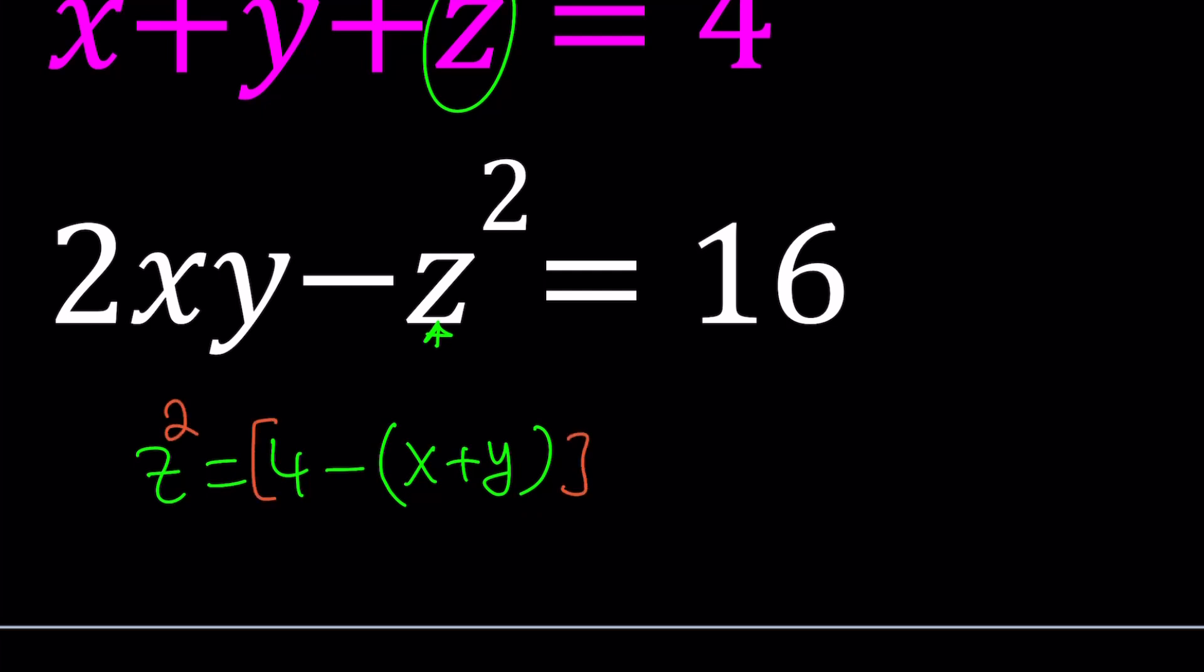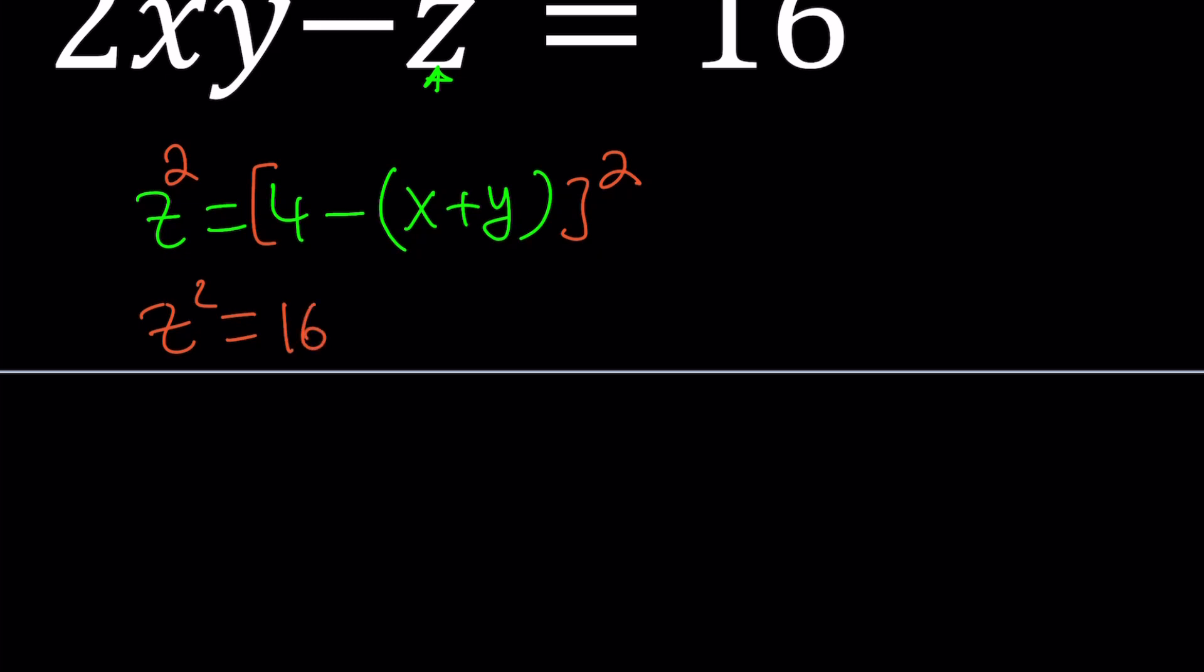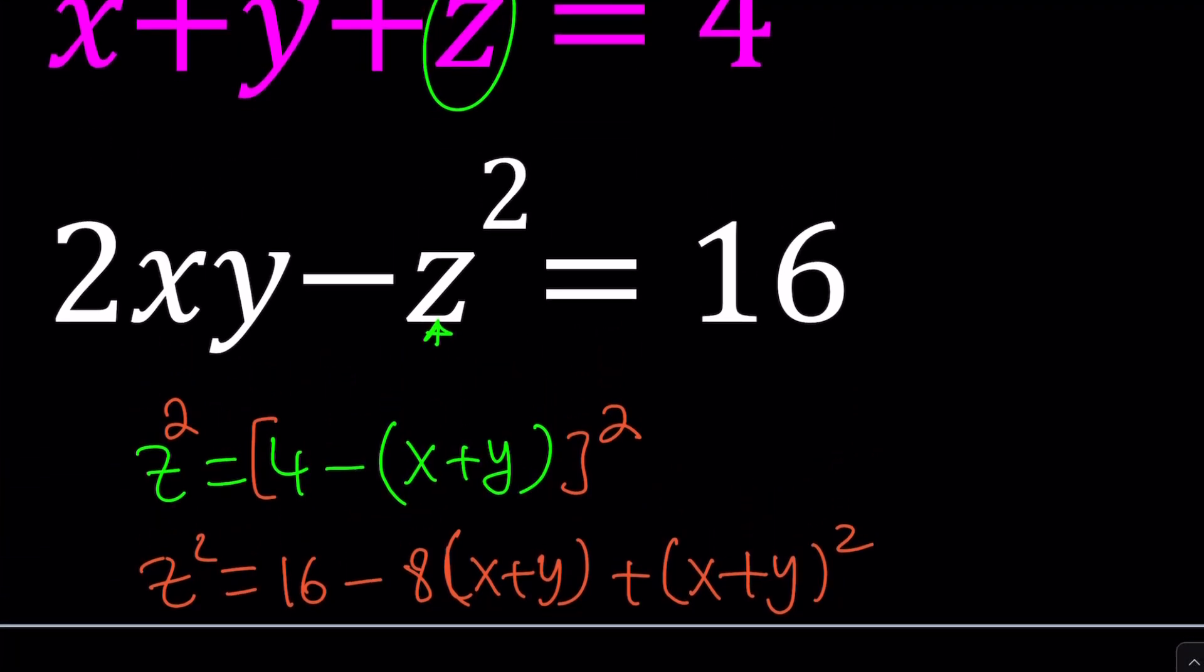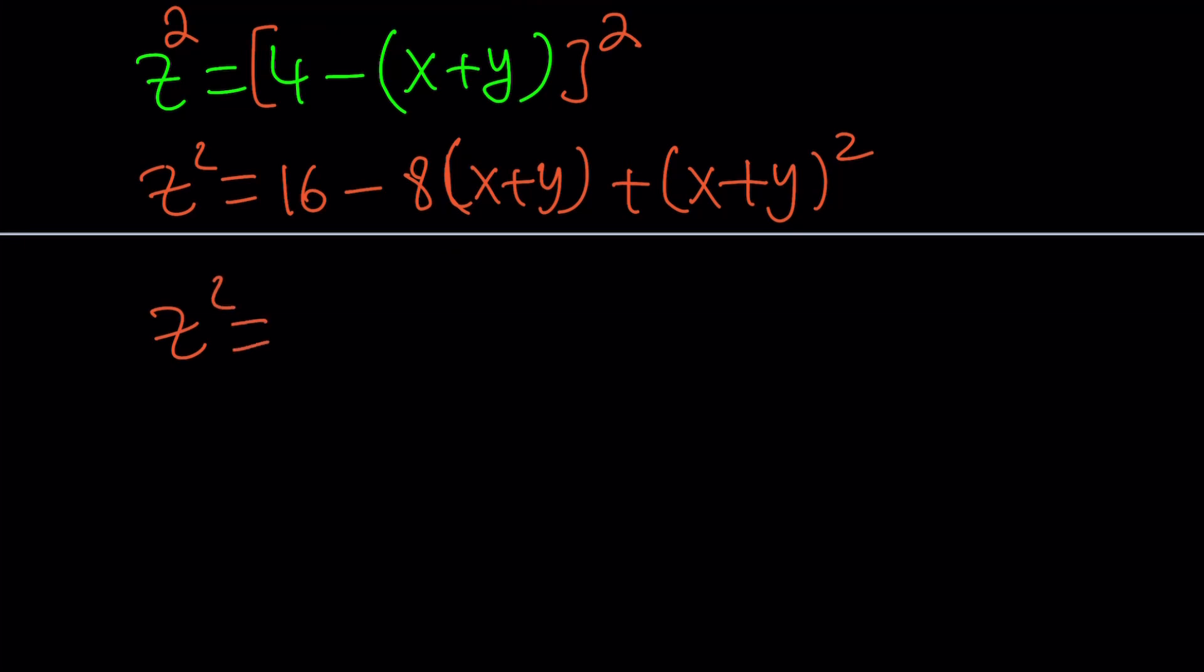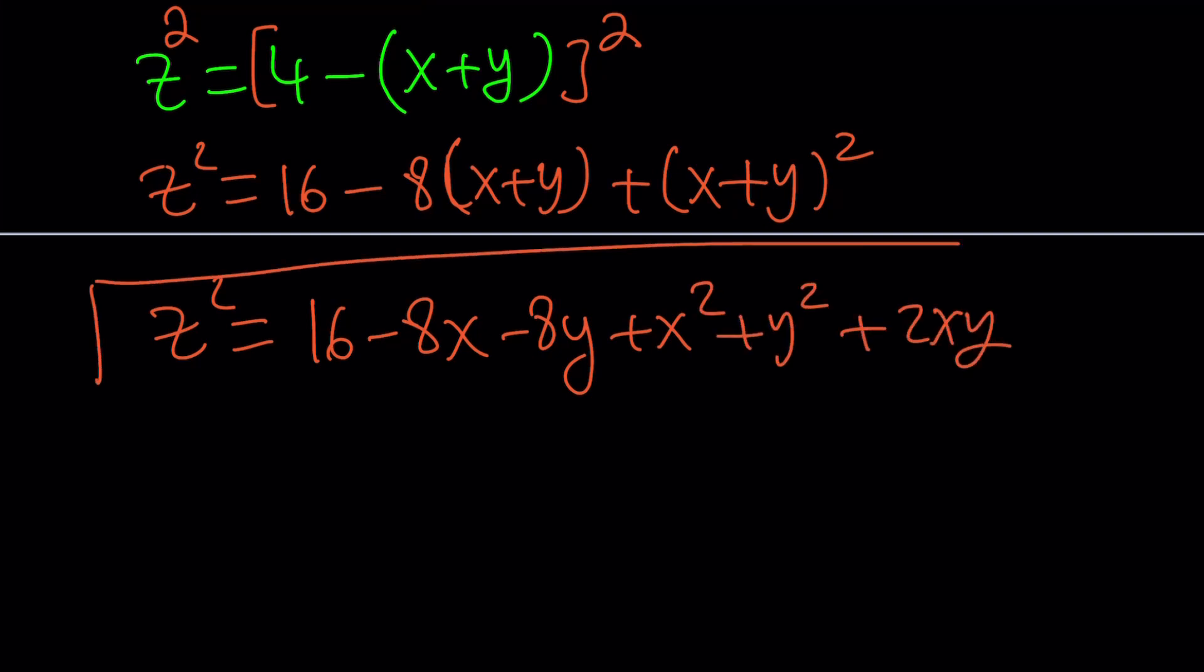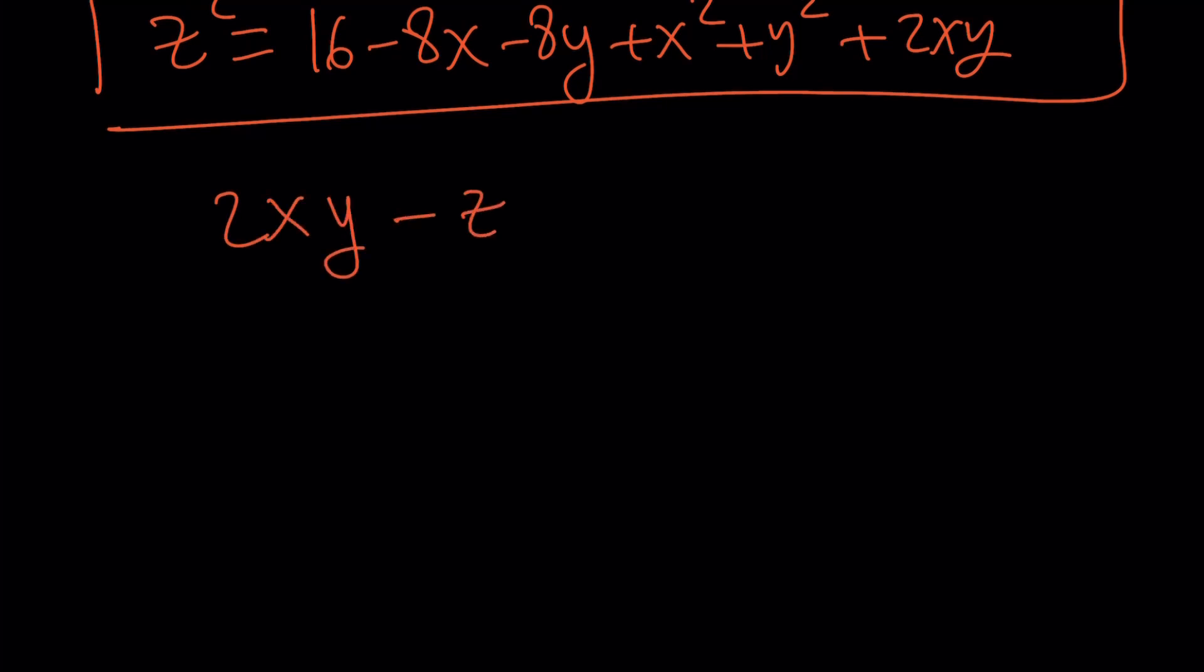Let's go ahead and square both sides. z squared equals, now we're going to treat this as like an A minus B, which is a little easier than A minus B minus C squared. Pretty much the same thing, but I find it a little easier. A squared and then minus 8 or 2AB and then plus B squared. Awesome. Now, what are we going to do with this? We replace z with that. And obviously, we want to plug this in here.